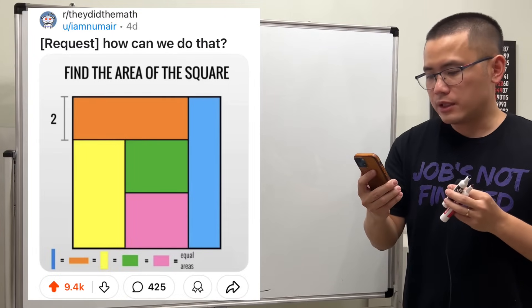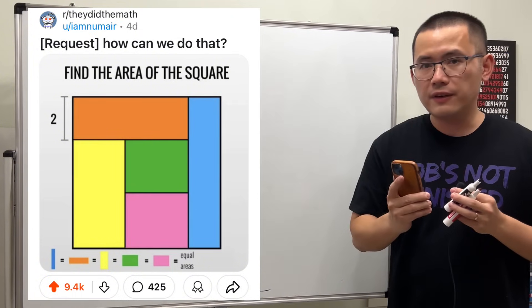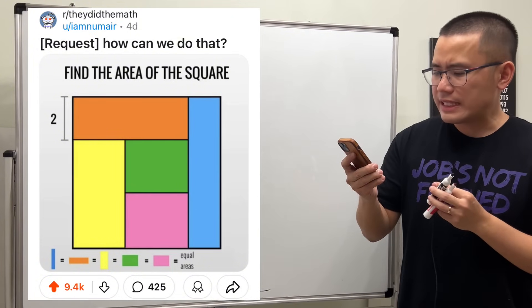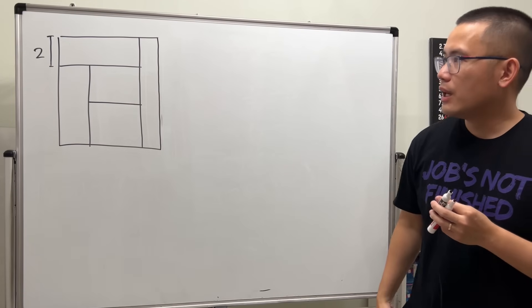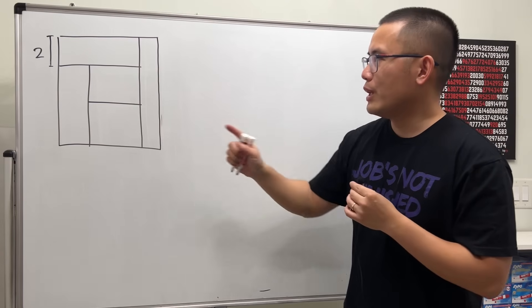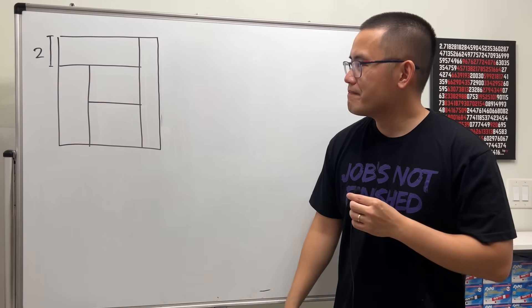The question is we are going to find the area of this square and we are given that the rectangles inside they all have the same area. So now let's take a look. We only know this right here is two and then we have to find the area of the square.